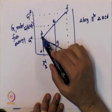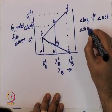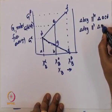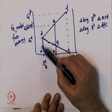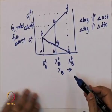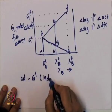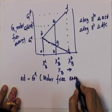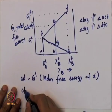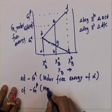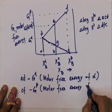The second similarity is that triangle DEG is similar to triangle DFC. Now, point AD is the molar free energy of alpha — AD equals G alpha. Similarly, CF is nothing but G beta, the molar free energy of beta.